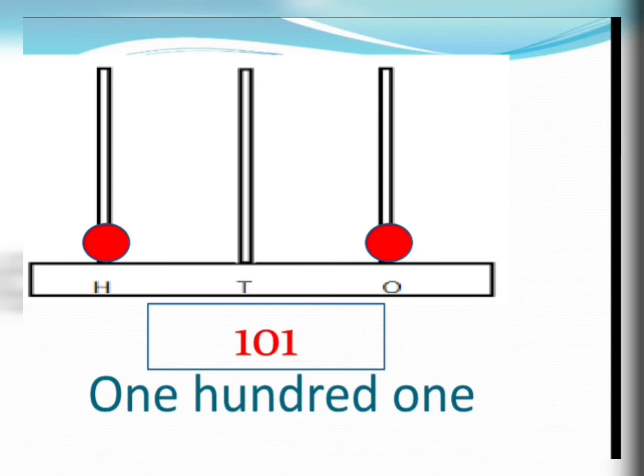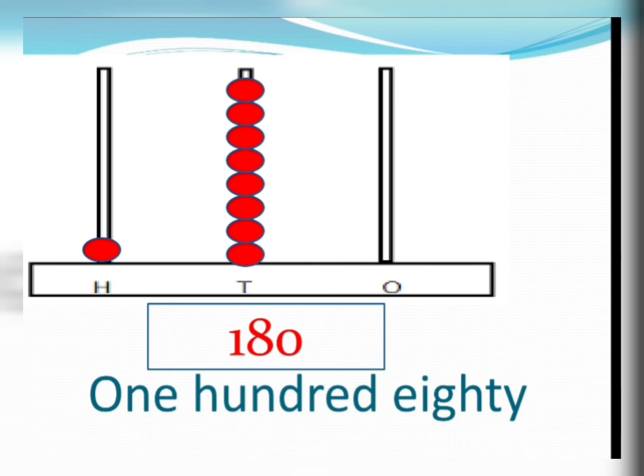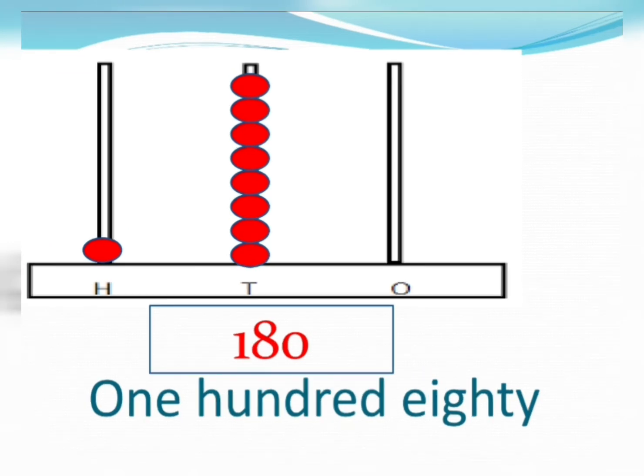So students, hum next example dekhte hain. Next example bhi three digit numbers on the abacus ka hai. Students, yahan dekho. H mein kitni beads hai? Hundred pe one. One means one hundred. Abhi tens pe kitni hai? One, two, three, four, five, six, seven, eight. Eight beads, matlab eight tens, eighty. So, humne kya kya eight beads hai, toh humne niche eight likh diya. Ones me kitni beads hai? Zero, toh humne zero likh diya. Humne kya kya hundred me one bead hai, toh one likh diya. Tens me eight beads hai, toh eight likh diya. And ones me zero bead hai, toh zero likh diya. Abhi konsa number ban gaya? One hundred eighty. Niche one hundred eighty ki spelling likh di.